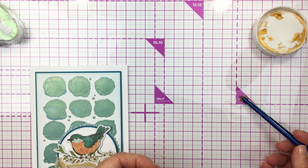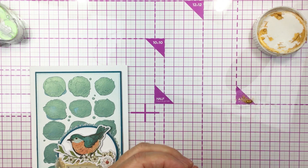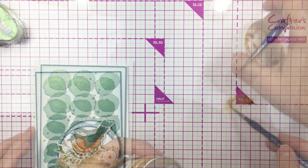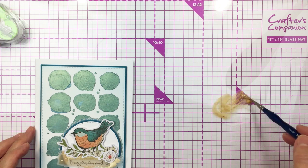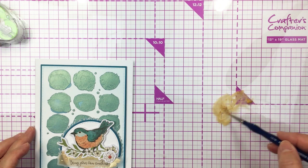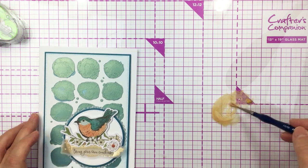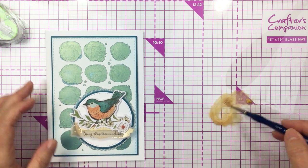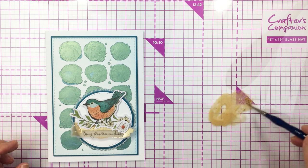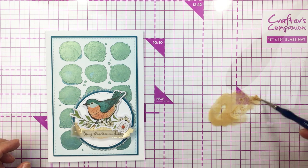I'm going to grab some of the gold glaze and put that out onto my glass mat here. I'll water that down and then I'll pick that up with a brush. This is just a fine paint brush and I'm just going to splatter that onto the card just to add a little bit of gold texture and shine and that's going to finish off the card.